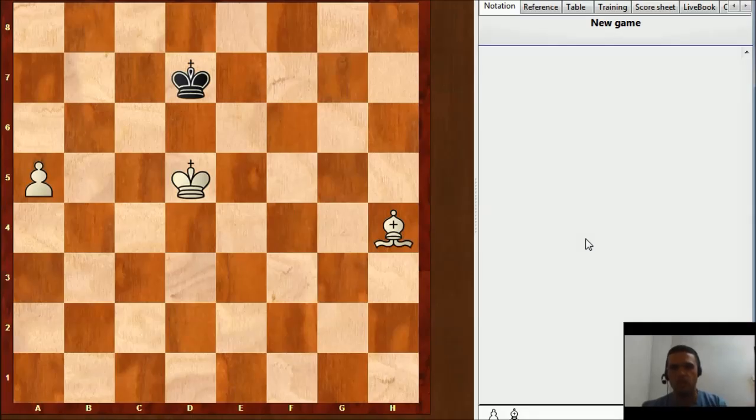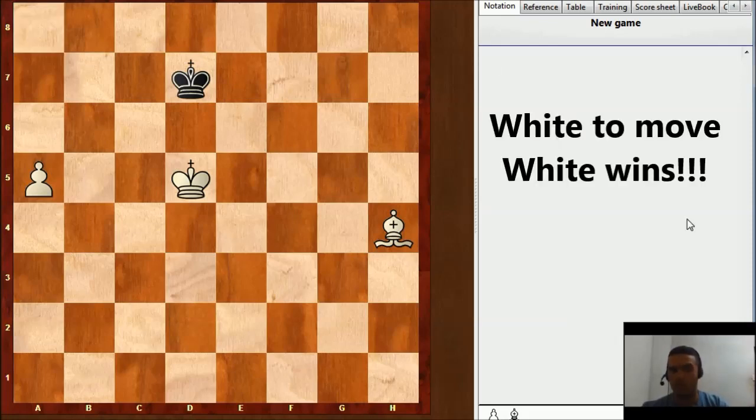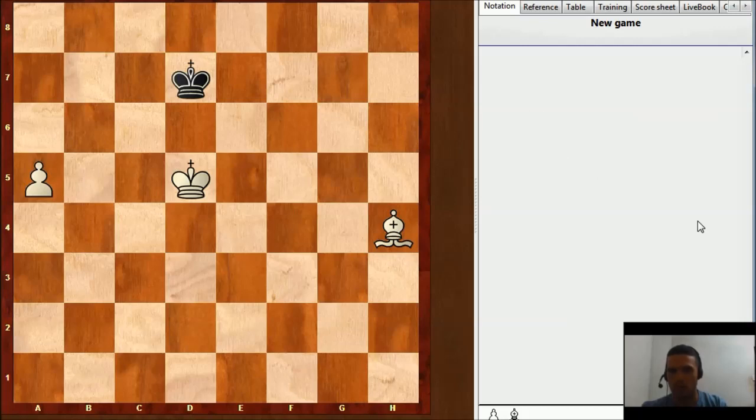Let's see what happens if the defending king is not controlling the promotion square. Right now it is white to move, and white is winning. Try to find the best move.